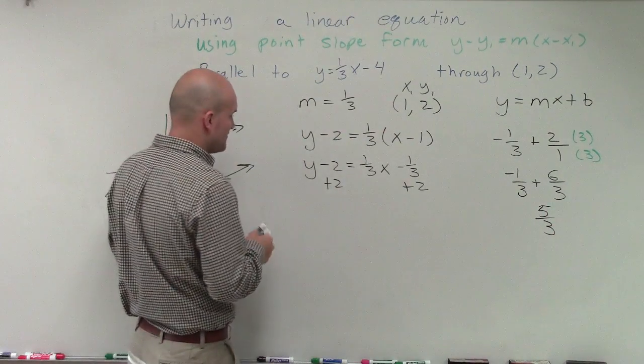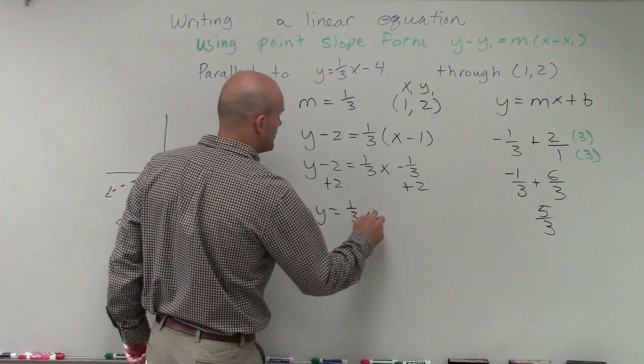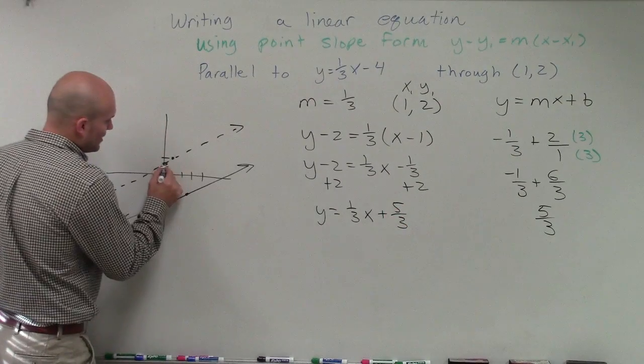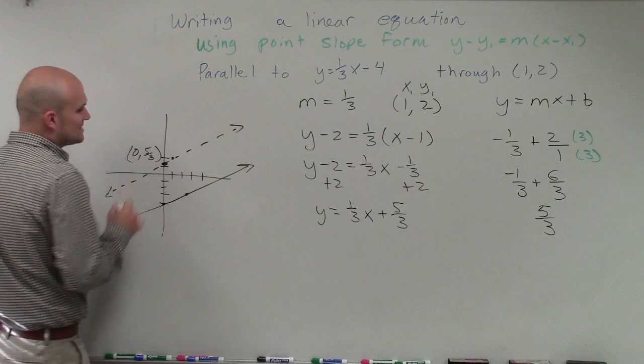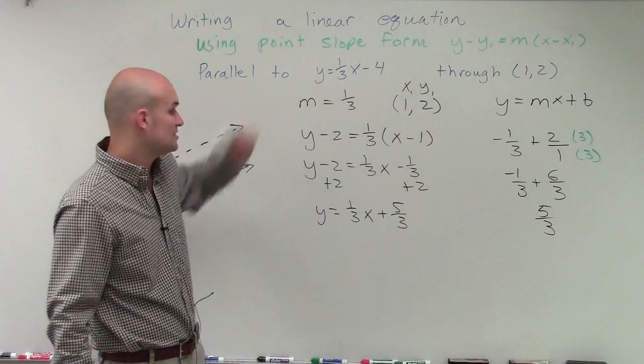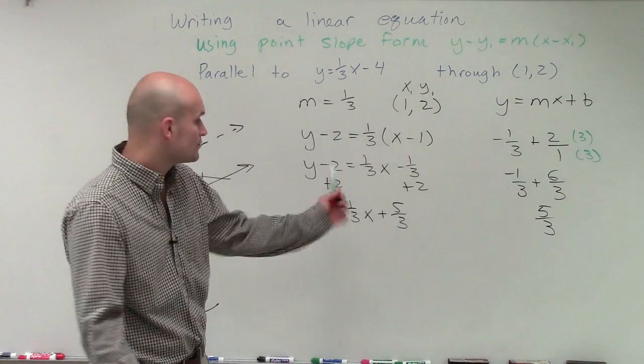Okay. So therefore, now my final equation is going to be y equals 1 third x plus 5 thirds, where you can see this point right here is going to be 0, 5 thirds, as that's the y-intercept. And then it has a slope of 1 third, which we know has to be true for it to be parallel to this equation. And 5 thirds is less than 2, but it is greater than 1.